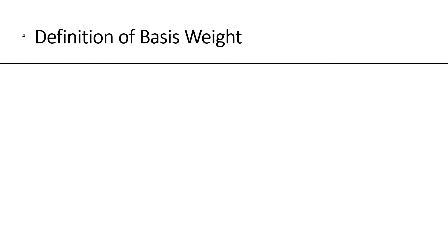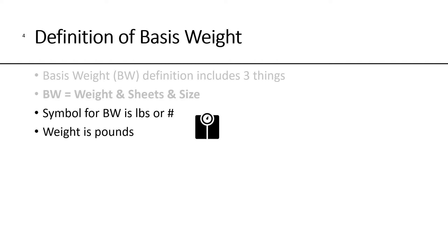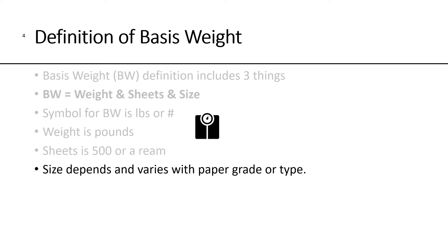By now, we should have a good definition for basis weight. It includes three things: the weight, the number of sheets, and the size of the paper. The symbol for basis weight is pounds or the number sign, hashtag. The sheets is always 500, which is called a ream. And the size depends and varies with the paper grade or the type.